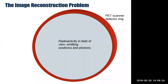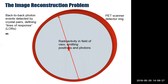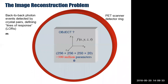Looking at that again from another angle: we've got an unknown radioactive distribution inside the PET scanner, and here we see a few example back-to-back photon pairs being emitted, detected by the ring of crystals around the patient. The goal of image reconstruction is to estimate that radioactive concentration just from those detections. We could typically have anywhere from 100 million up to 1 billion such back-to-back photon pairs from which we reconstruct the 3D distribution of the radiotracer.